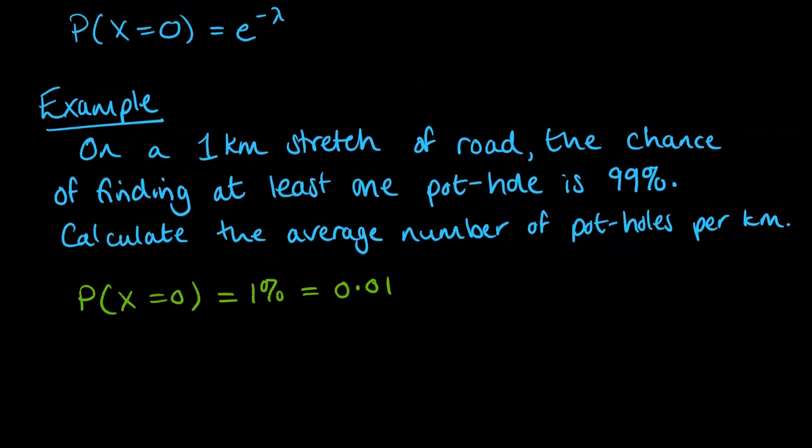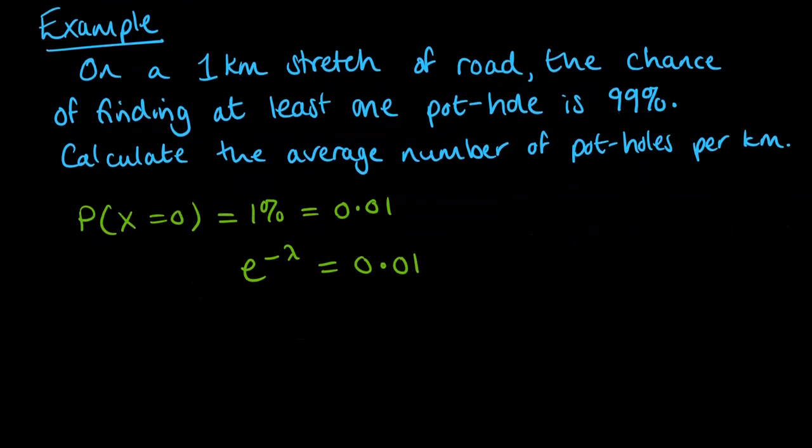Then if that's our formula, we get that e to the minus lambda is equal to 0.01, and from there we can pop this into equation solver on our calculator or we can solve it algebraically. At this point, if you have a graphics calculator you can use equation solver.